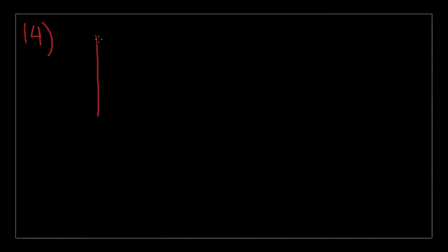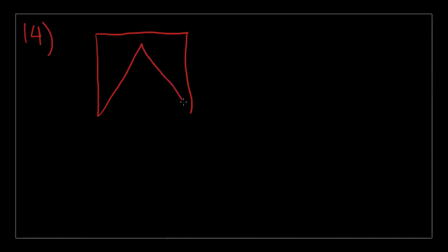Now we'll go to number 14, which is another diagram. It looks like a pizza slice taken out of a square. This is 6, this is 6, this is 6, this is 6 — these are right angles. This is 30 and this is 30. So, what is the perimeter of the figure above?